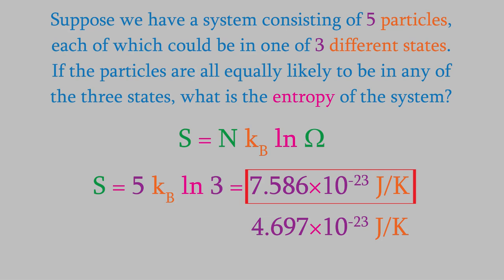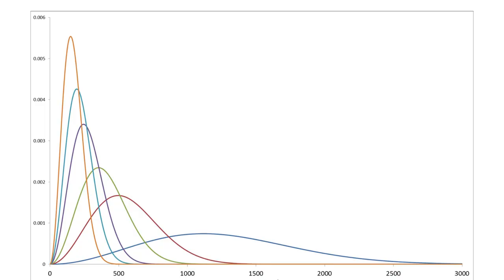As we saw a little earlier, that would make W equal to 1, and using this equation, we would have 0 for our entropy. Just as having all the particles in the same microstate gives us an entropy of 0, the more widely the particles are distributed among the different states, the larger the entropy will be.